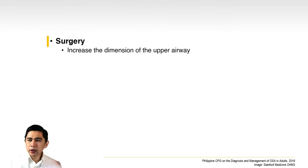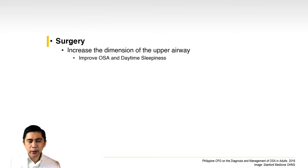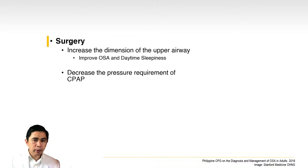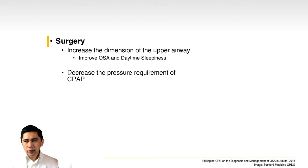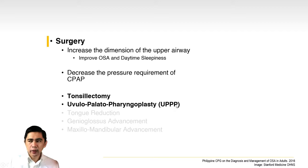Surgery is employed to increase the dimension of the upper airway, which improves OSA and daytime sleepiness. Surgery also decreases the pressure requirement of CPAP. If you have large tonsils, adenoids, or a very large uvula, you need more CPAP pressure to keep the airway open. Surgical reduction of these structures decreases the pressure requirement, increasing patient compliance with CPAP.